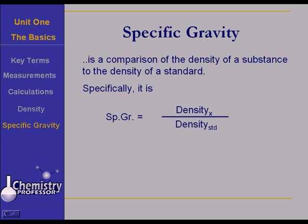There's something you need to realize here. The units of the density of x and the units of density of the standard are the same. So the units will cancel. Therefore, specific gravity is dimensionless. It has no units.